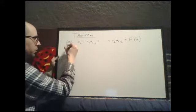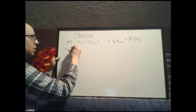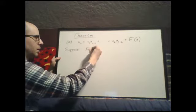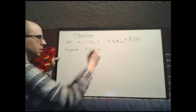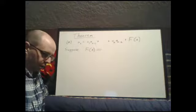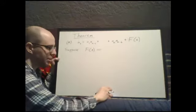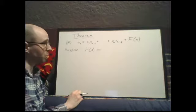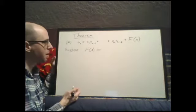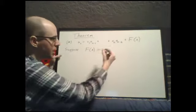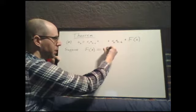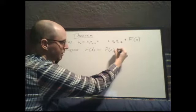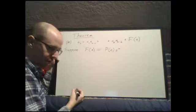Now let's suppose that f of n has a certain form. Let's tough it out through the theory and then do plenty of examples to illustrate. f of n equals p of n times s to the n,